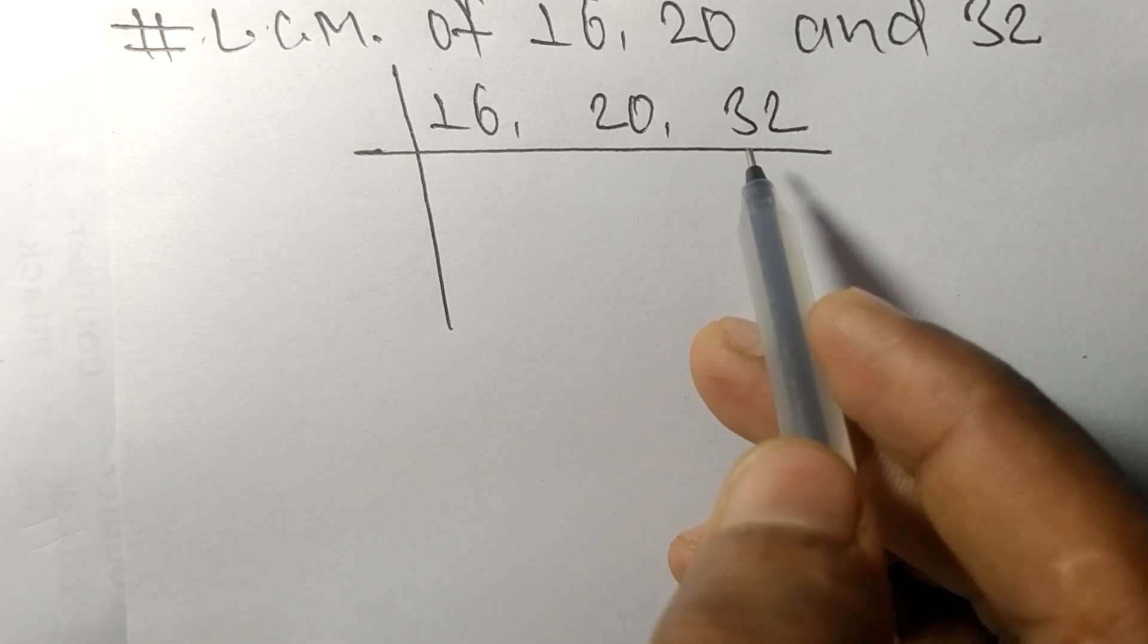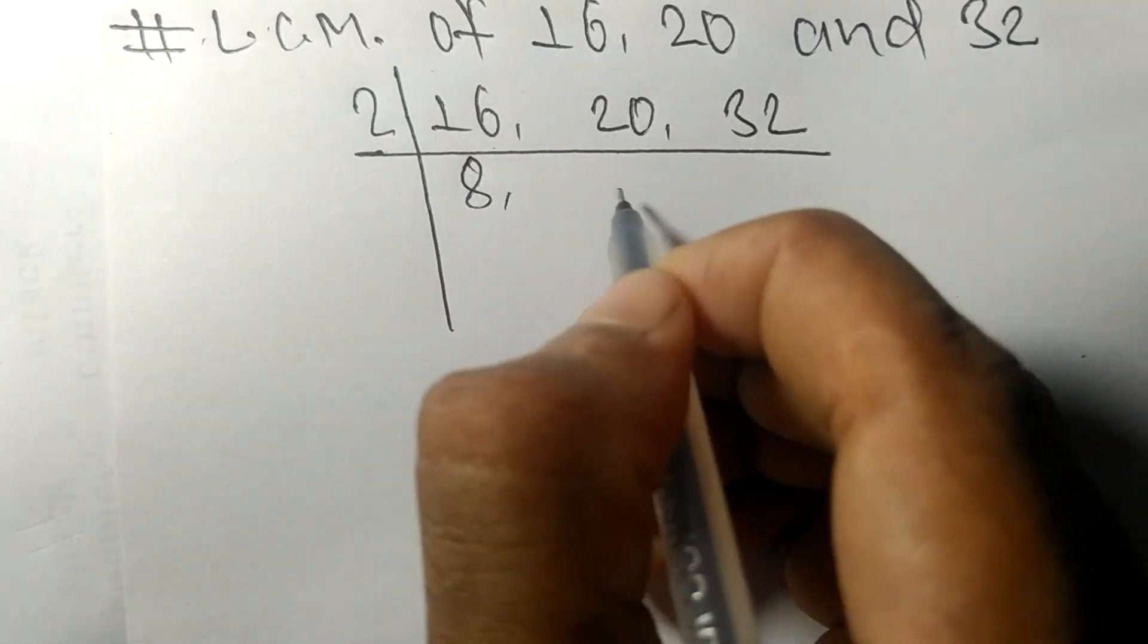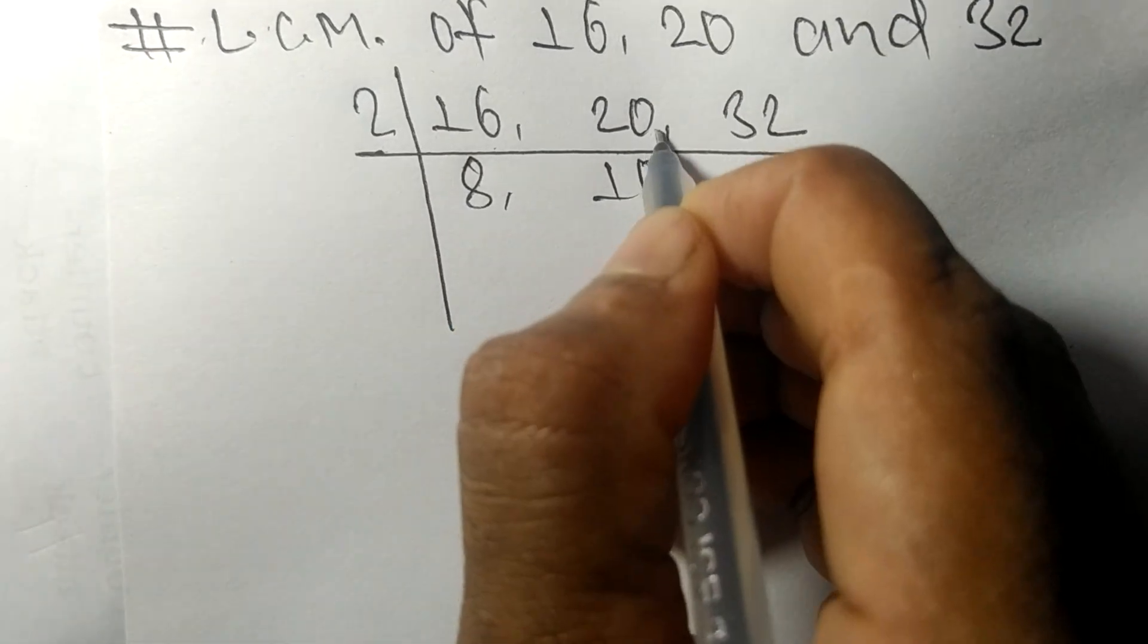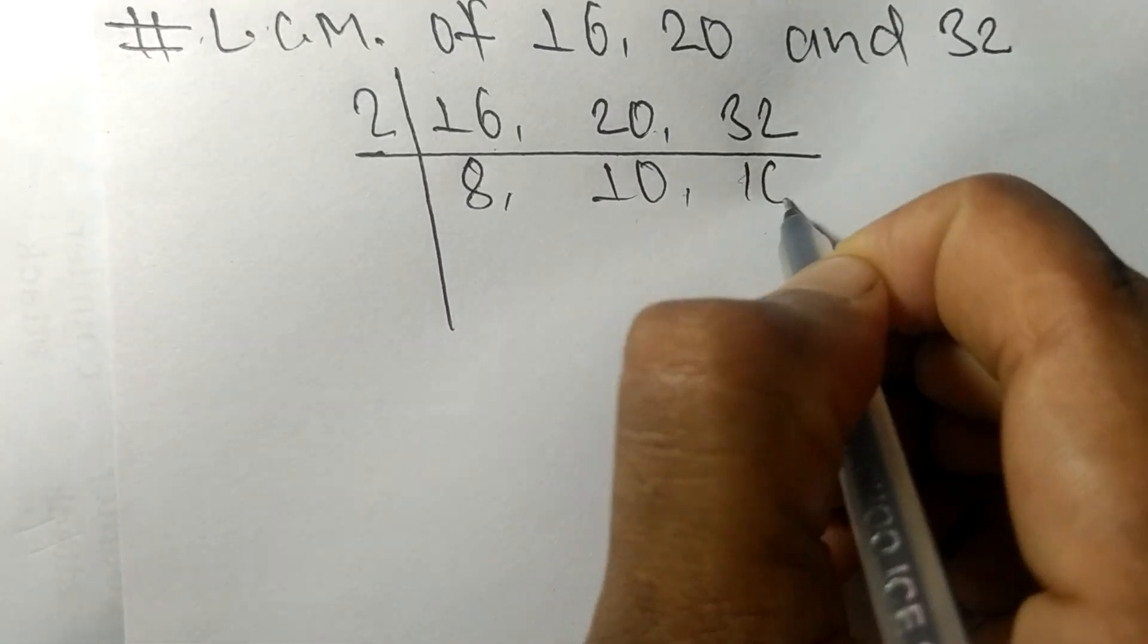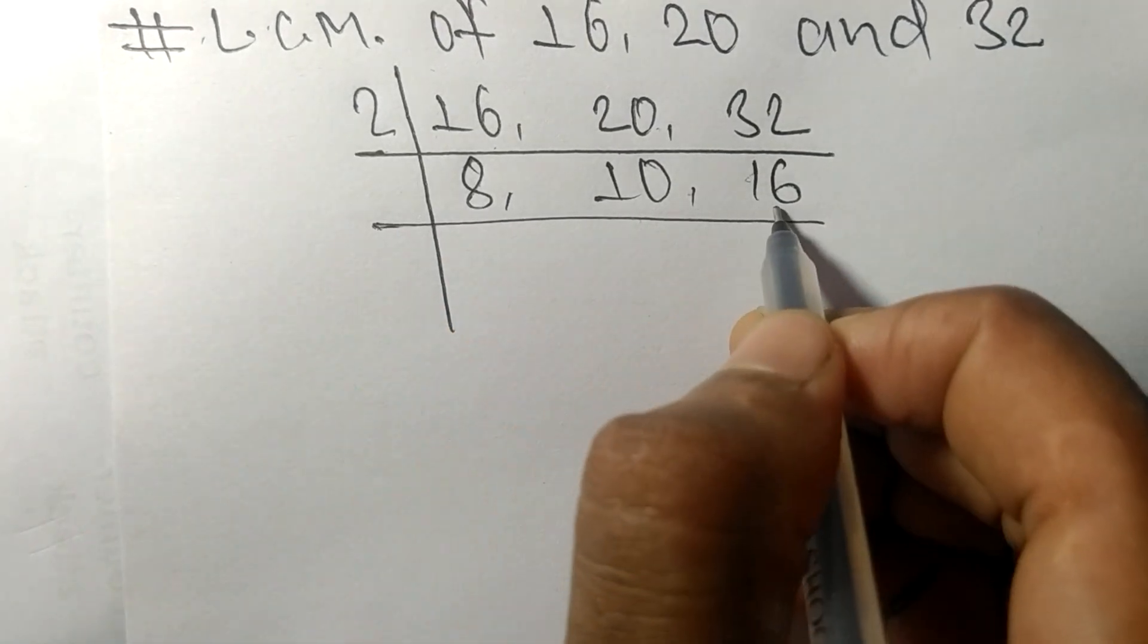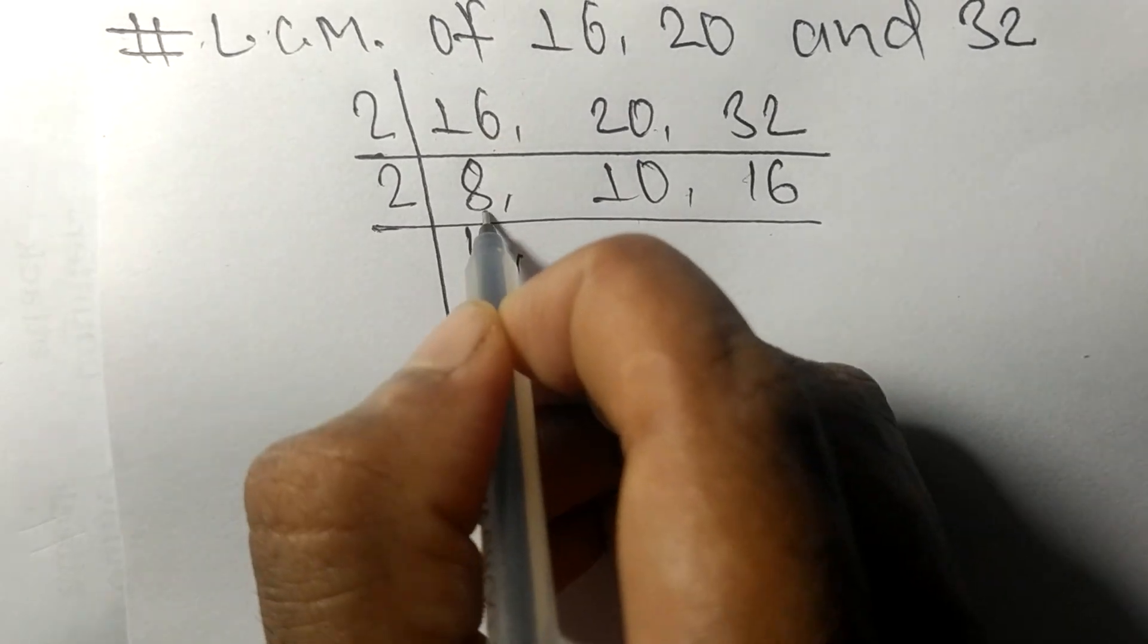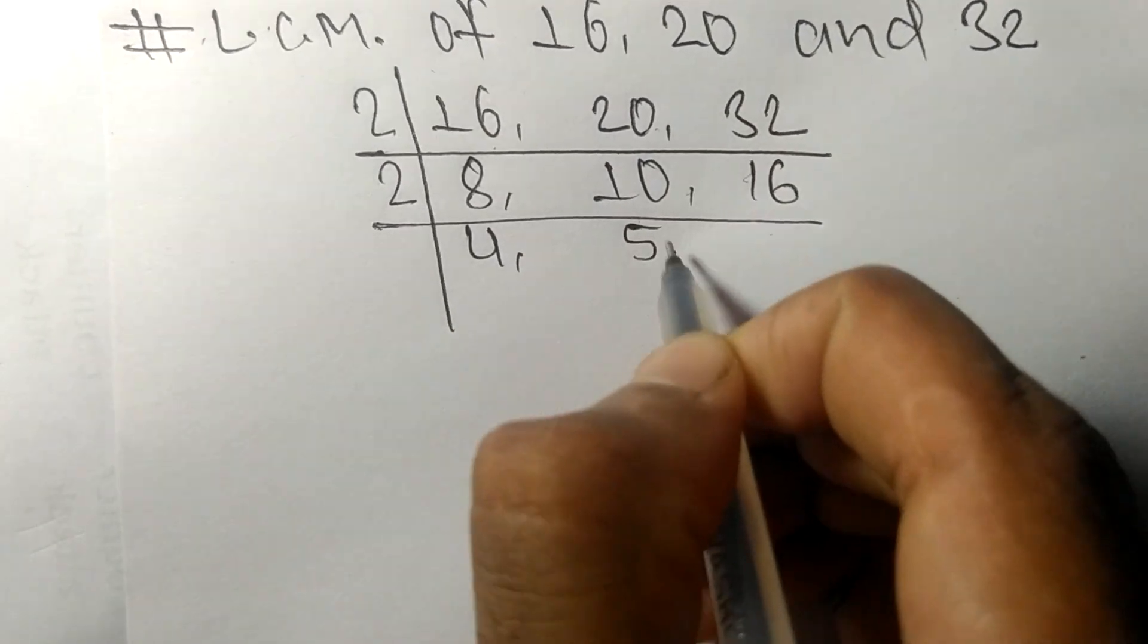These all numbers are divisible by 2. 2 times 8 means 16, 2 times 10 means 20, 2 times 16 means 32. Again, these all numbers are divisible by 2. 2 times 4 means 8, 2 times 5 means 10, 2 times 8 means 16.